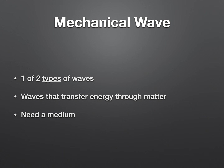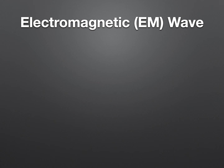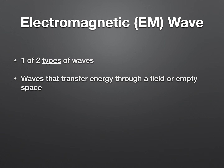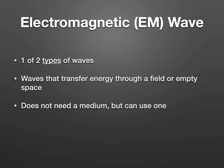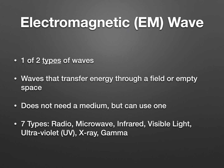The other type of wave is an electromagnetic wave — you can write EM for short. These waves transfer energy through a field or empty space, just like outer space is empty space. It does not need a medium, but can use one. There are seven types of electromagnetic waves, and they're listed there for you. The most famous of all of them is light, but you can probably look at all of them and say you've heard of them before. So those are the two types of waves.